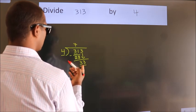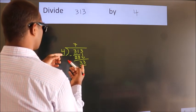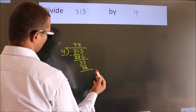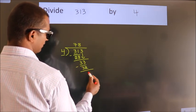A number close to 33 in 4 table is 4 8's 32. Now we subtract. We get 1.